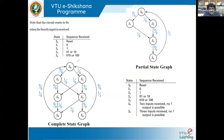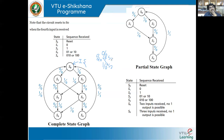Looking at the complete state graph again: S0 is the initial state. Irrespective of whether X is 0 or 1, a state change occurs. From S0 I move to S1 when X equals 0, or to S2 when X equals 1, both with output 0. If I am in S1, again I check for X — if 0 go to S5, if 1 go to S3.